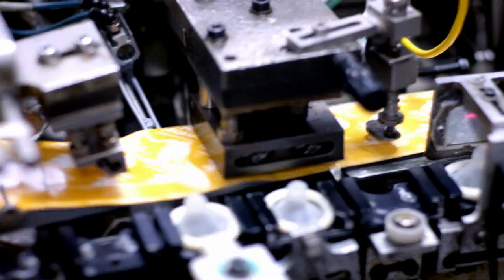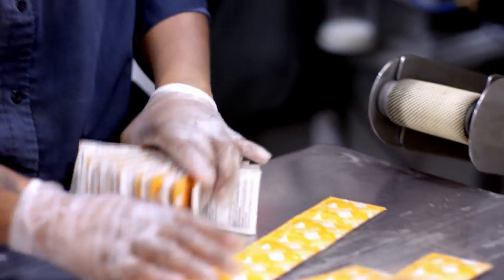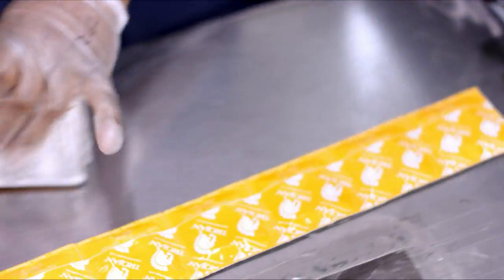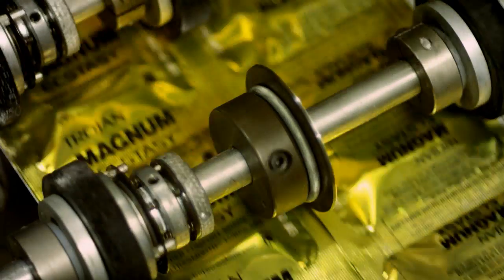Two opposing foil webs are heat-sealed together, forming the wrapper. The wrapper materials, which are carefully selected to meet stringent quality standards, are custom designed to protect the condoms and keep them safe.